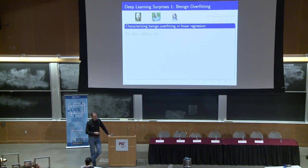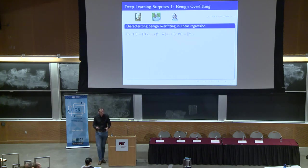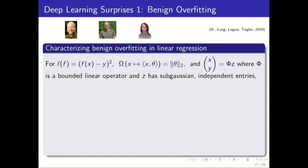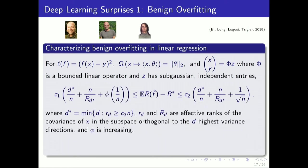Let me tell you about a result for a linear setting. This is joint work with Phil Long, Gabor Lugosi, and Alex Sigler. Linear regression, squared loss. The regularizer, the complexity here, is the norm of that linear function, the norm of the parameter vector. Think of x, y as jointly Gaussian. You can do things more generally. You can get a characterization of when the minimum norm interpolating function, the one that matches the data, has an expected squared error close to the optimal.